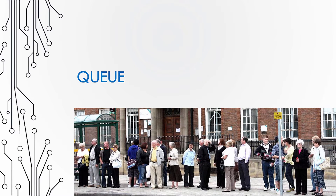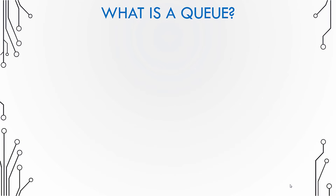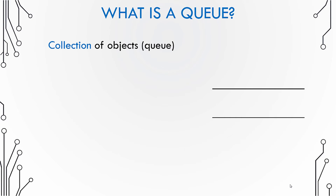In this video we are going to learn about what a queue is. In computer science, the queue is very similar to the real world queue that we have. A queue is basically a collection of objects, just like the real world queue where we have a collection of people.